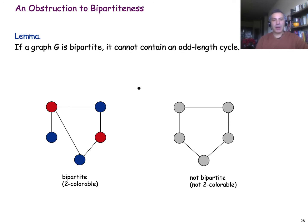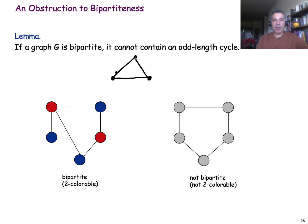A basic fact about bipartite graphs is that they cannot contain a cycle of odd length. This is easy to see for triangles, which of course have odd length. If we have a triangle in the graph, one node could be blue, the next red, the next blue — but then we have an edge between two blue nodes, which means the graph cannot be bipartite.